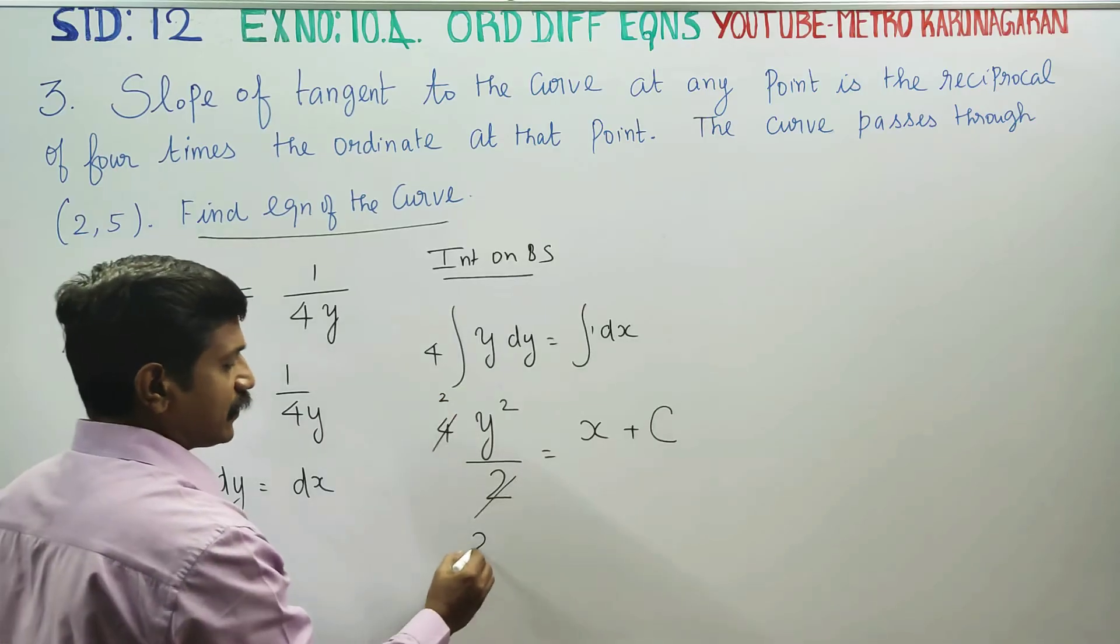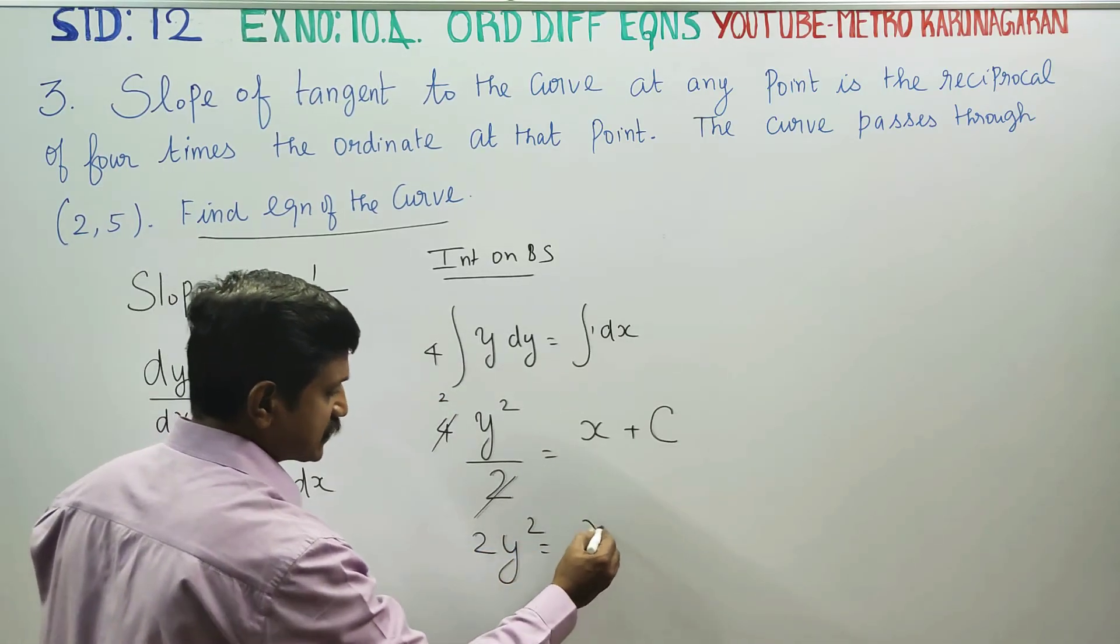Cancel the 2 with 4. Therefore, my net answer is 2y square is equal to x plus c.